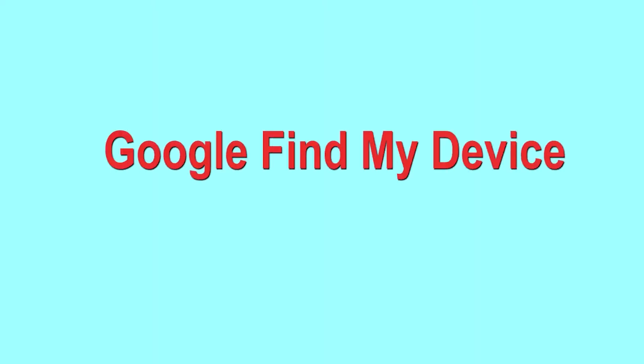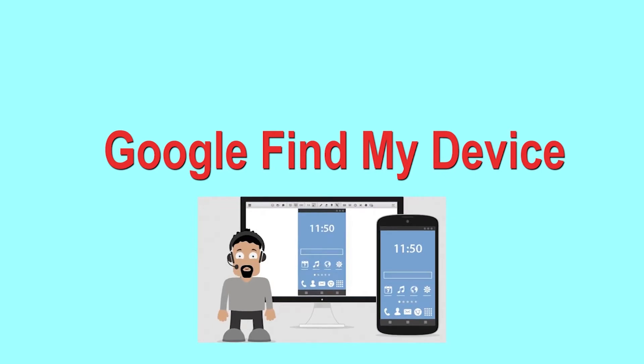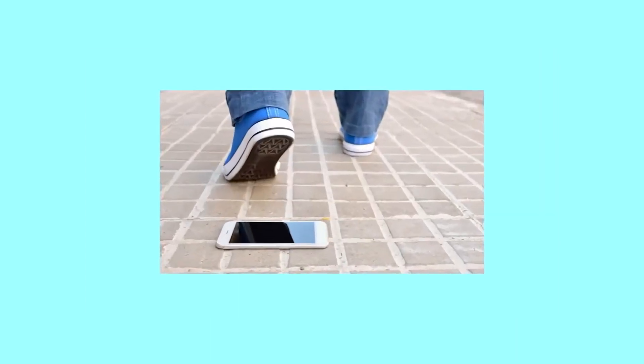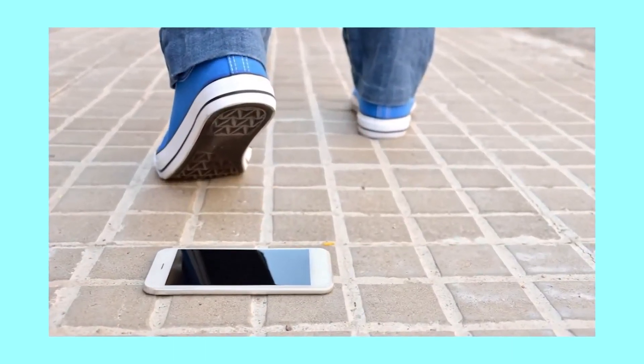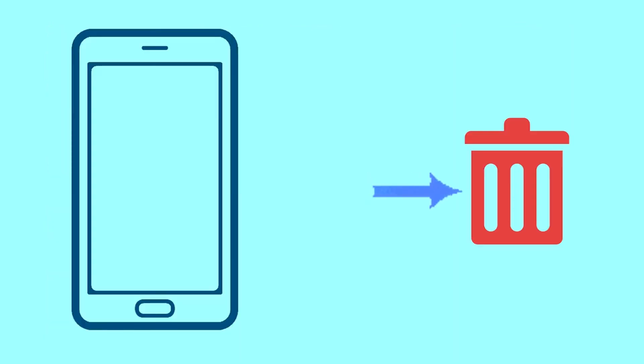Hard reset with Google Find My Device. This is the best method to reset your Android phone remotely. This method is useful when you lose your phone or are not able to access your mobile. This method also deletes all your Android phone data.